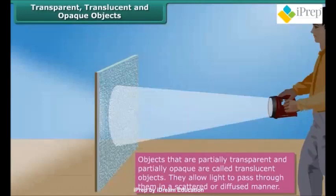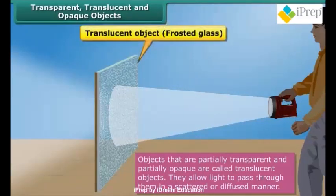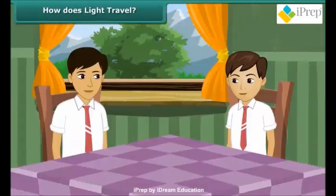Objects that are partially transparent and partially opaque are called translucent objects. They allow light to pass through them in a scattered or diffused manner. Frosted glass, tracing paper, greased paper, etc. are examples of translucent objects.